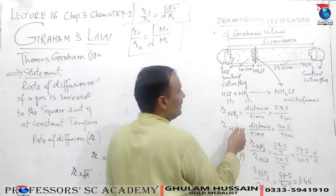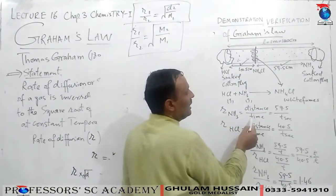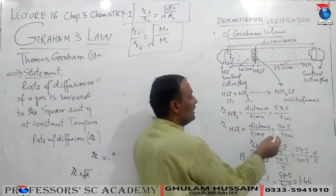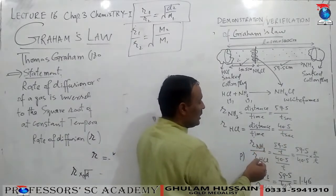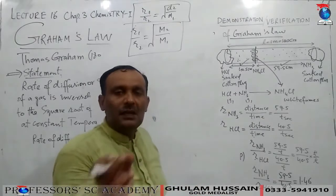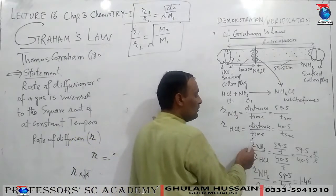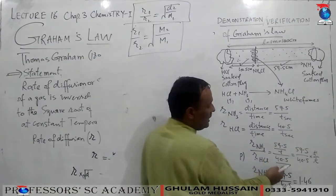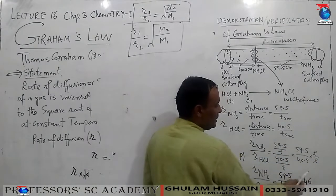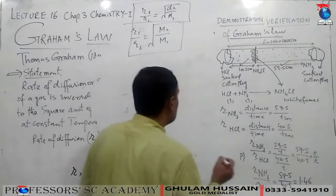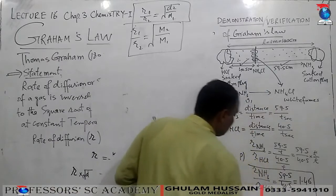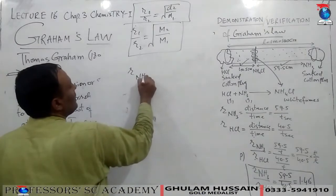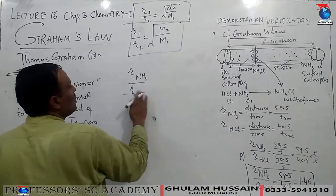Now let's calculate the rates. Rate = distance/time. In time T seconds, ammonia covered 59.5 cm and HCl covered 40.5 cm. Taking the ratio: rate of diffusion of ammonia / rate of diffusion of HCl. Since both use the same time T, T cancels out, giving us 59.5/40.5 = 1.46. This is our experimental result.